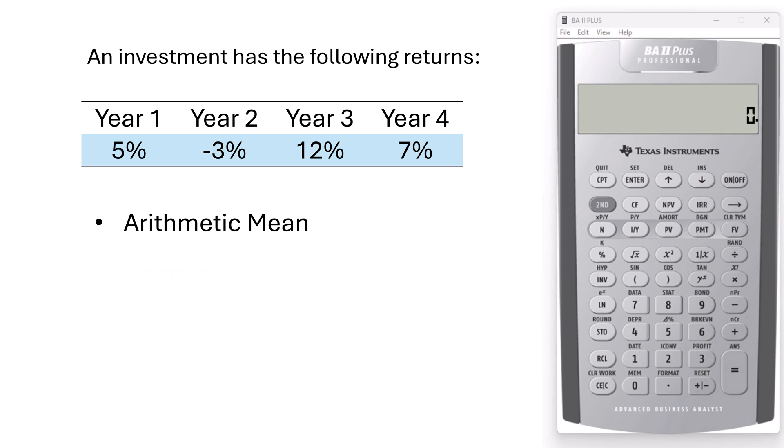For the arithmetic mean or simple average, we simply add the returns and divide by the number of periods, 4, giving us 21% divided by 4 or 5.25%.